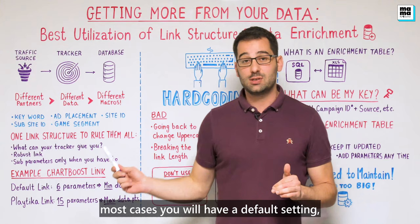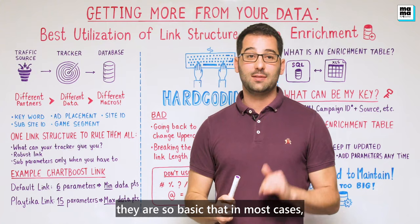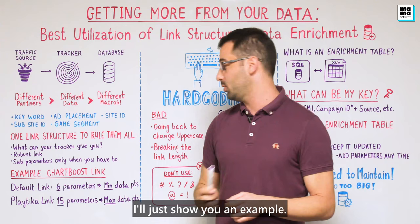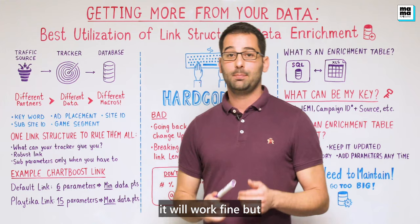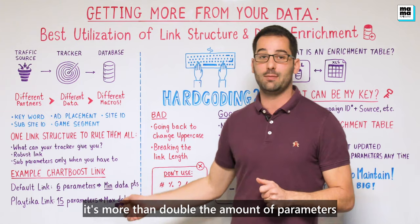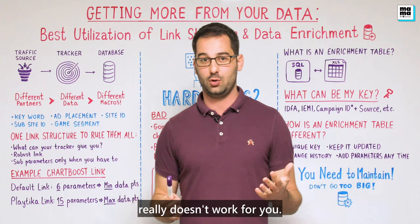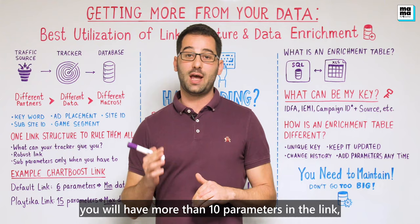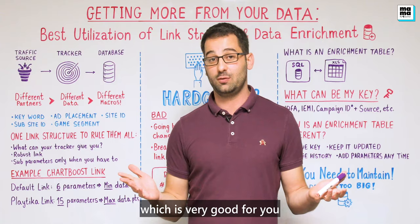In most cases you will have a default setting, a default link within your attribution platform or any other platform you're working with. These links are usually so basic that they will not give you the data you need. For example, I looked at the Chartboost link within AppsFlyer — you get six different parameters, which is a start. But when I look at Playtica's link, we have 15 different parameters — more than double — which means double the data. Double the data means better analysis, more capability to dive into the data and understand what's not working. If you have that set correctly for all your partners, you will typically have more than 10 parameters in the link. Keep it relevant to the specific partner's parameter so you can dive in.